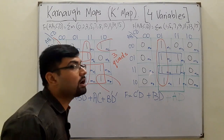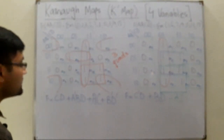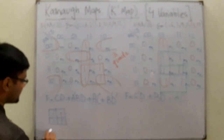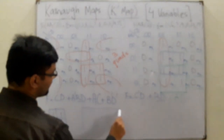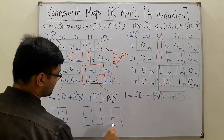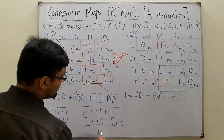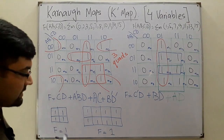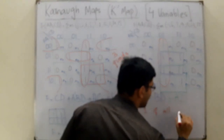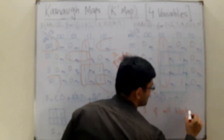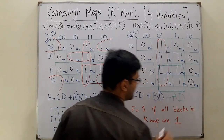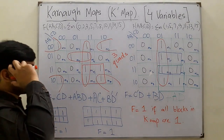A special case: what if all minterms are high? For a two-variable K-map with all ones (1,1,1,1), the function's value is simply 1. Similarly for a three-variable K-map with all cells equal to 1, the function is 1. In general, if all cells in the K-map are 1, the function equals 1.